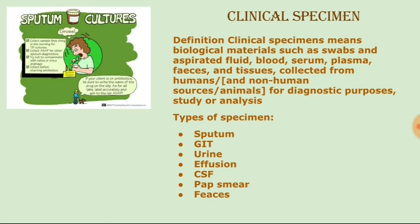A clinical specimen is a biological material — such as swabs, aspirated fluids, blood, serum, plasma, feces, and tissues — collected from human or non-human sources for diagnostic purposes. Aspirated fluids are fluids drawn into syringes. These biological materials are obtained from human or animal sources for analysis.